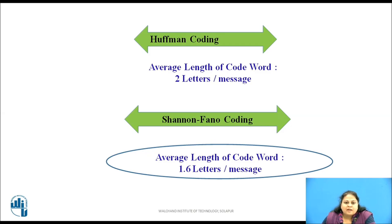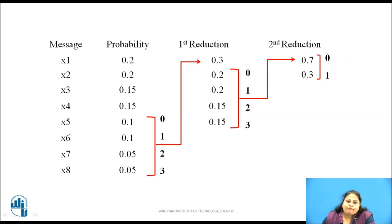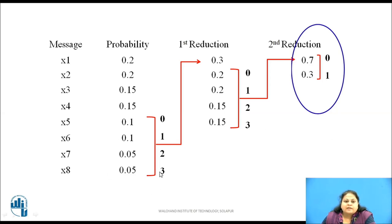Shannon-Fano coding is giving a more efficient result here, whereas in general Huffman coding is more efficient. So what is the problem? In the first Huffman coding, the number of terms obtained in the last reduction is equal to 2. This is a problem. Let us solve the same problem using Huffman coding such that the number of terms appearing in the last reduction is equal to 4 instead of 2.